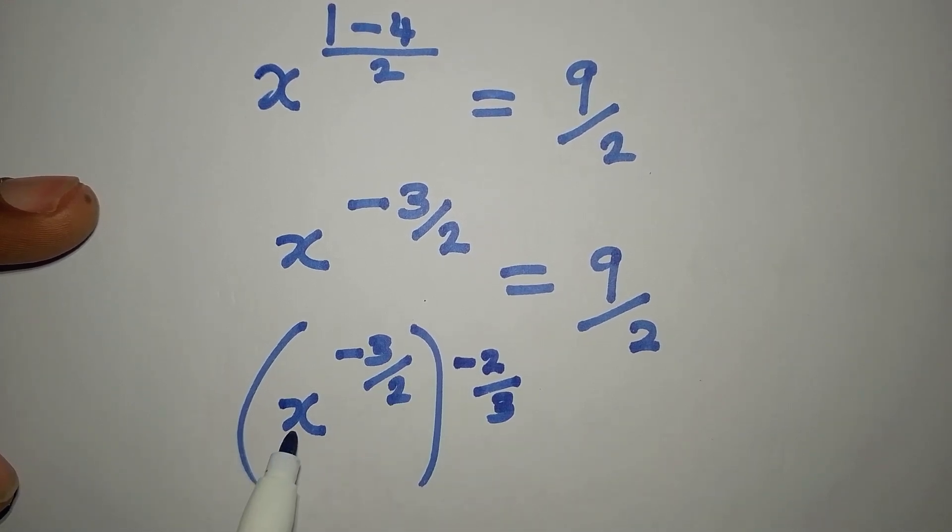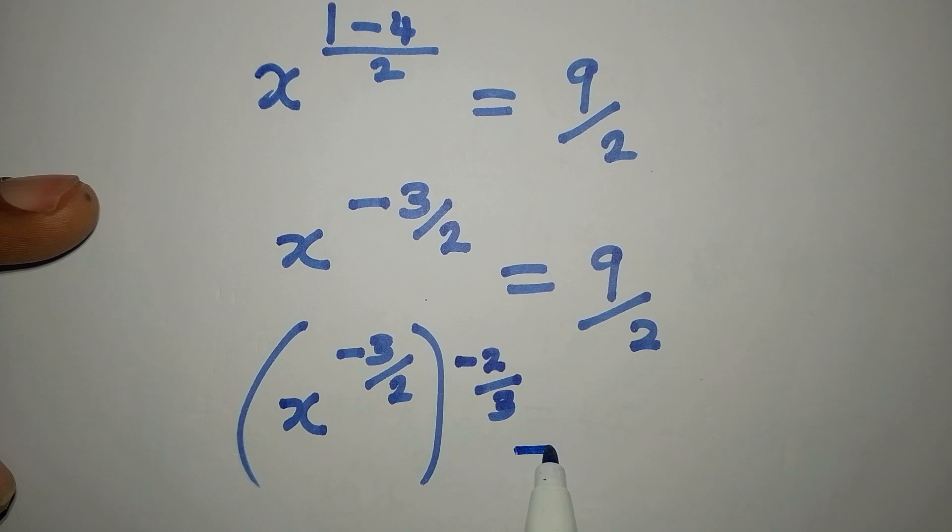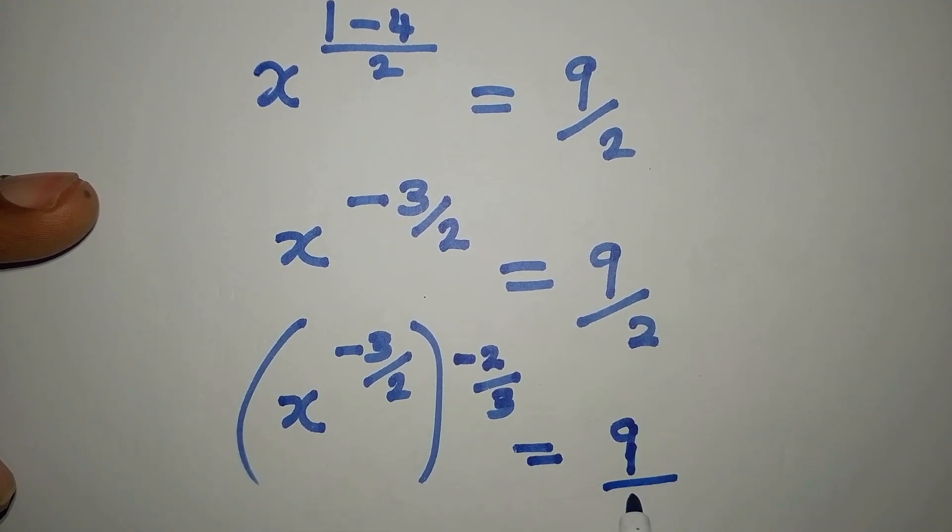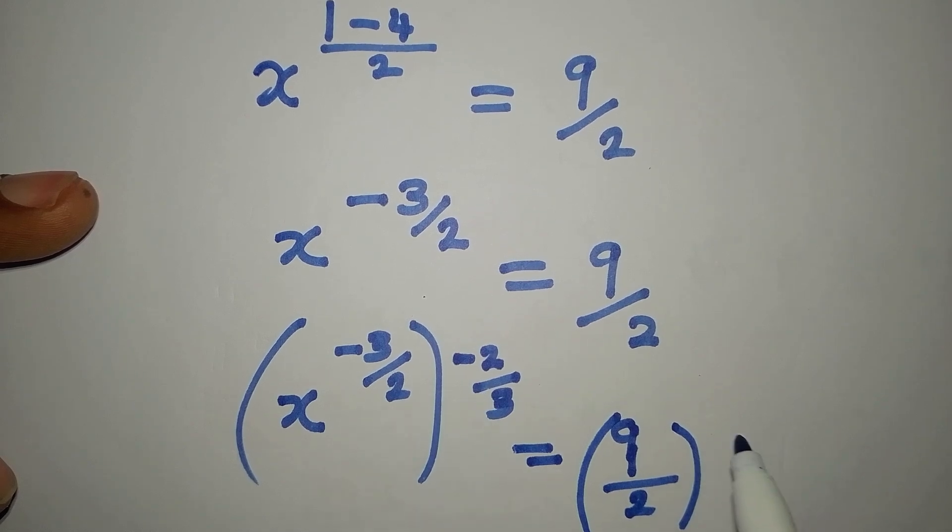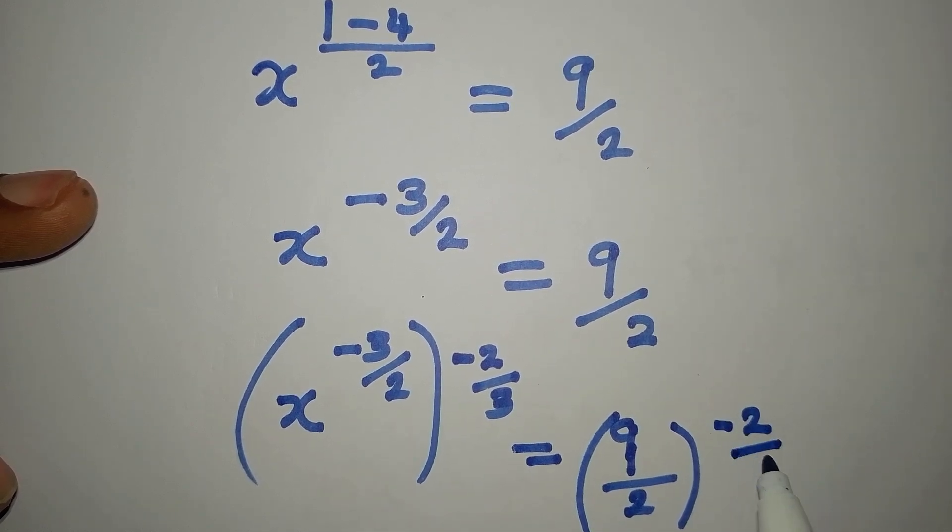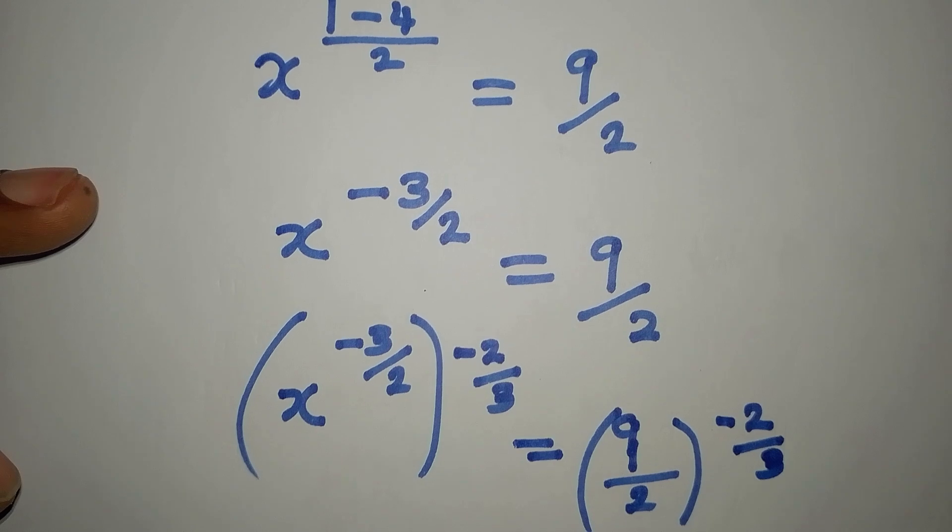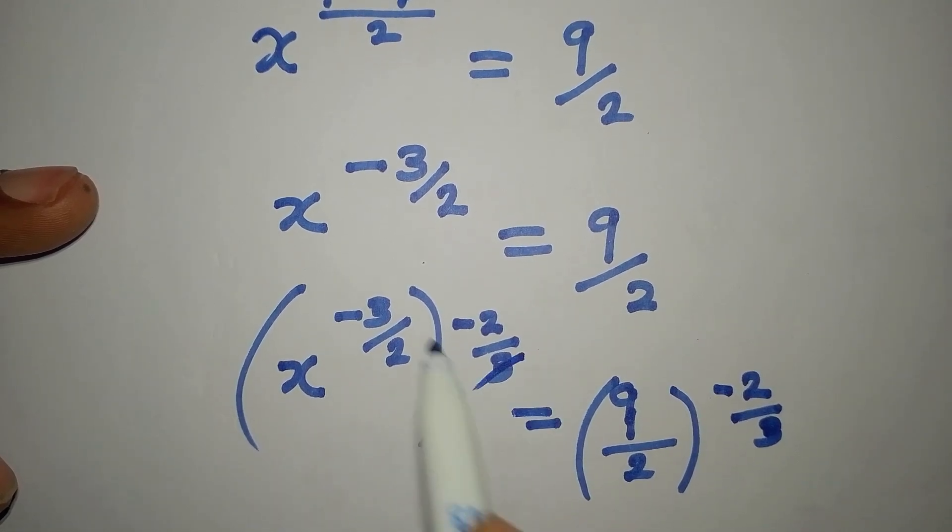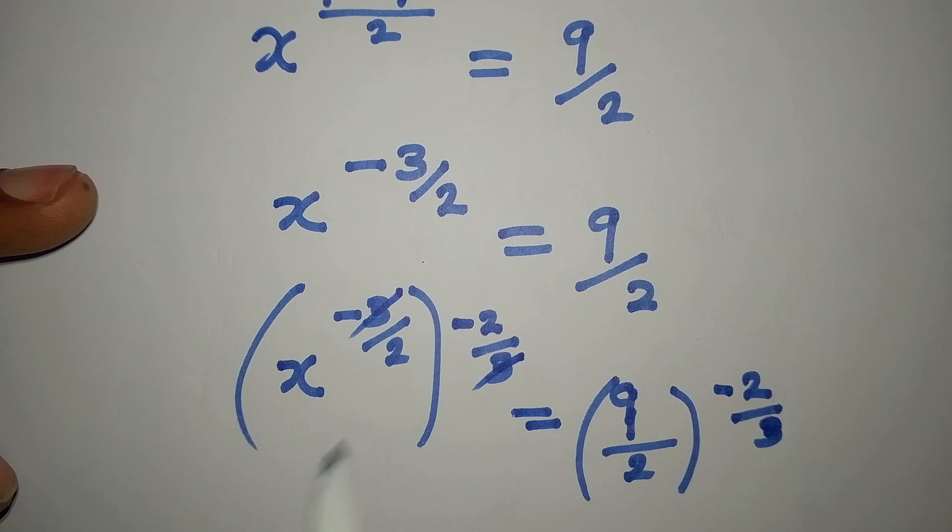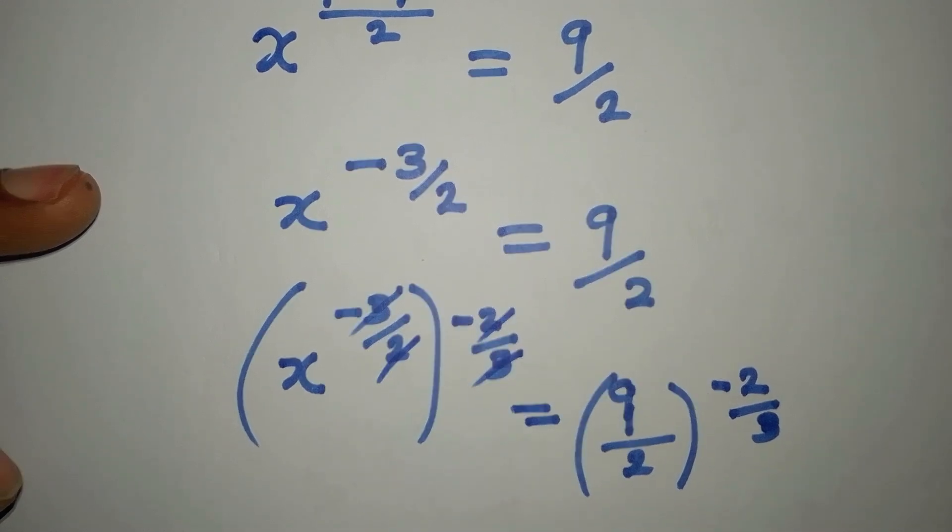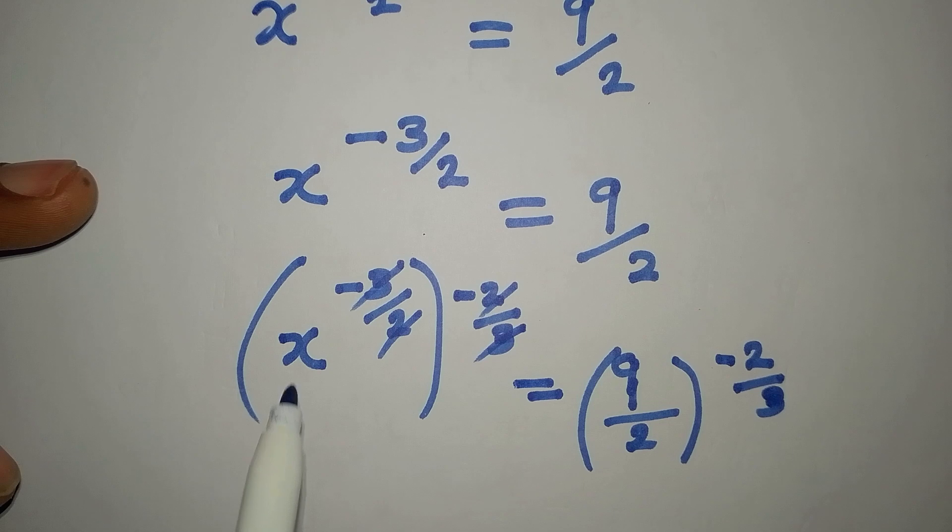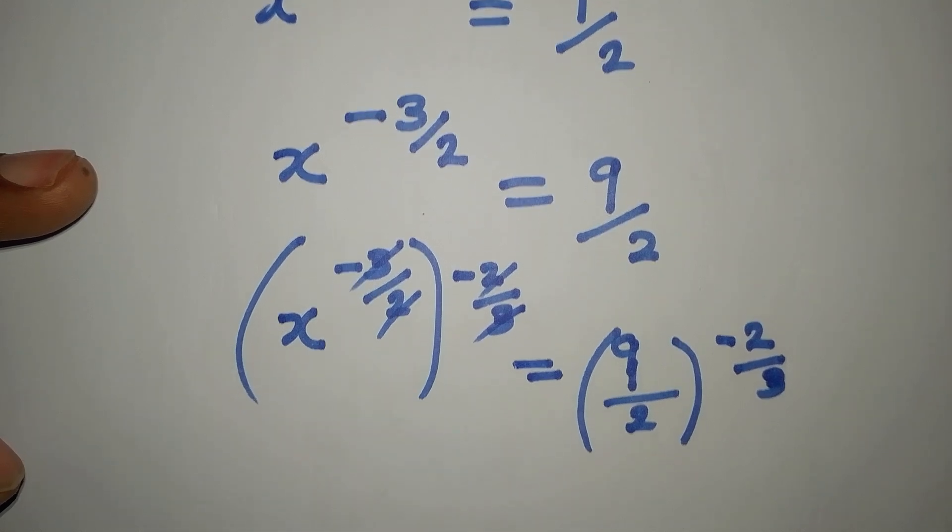And I believe you know that these two powers now will cancel each other and only x will be here. Then on the other side we have (9/2)^(-2/3). So if we do that, two and three will go out with this three and two. Then negative times negative will give us positive, so we have x to the power of positive 1, and that is the same as x. Then on the other hand we have 9